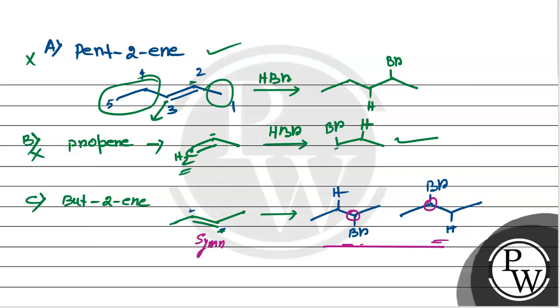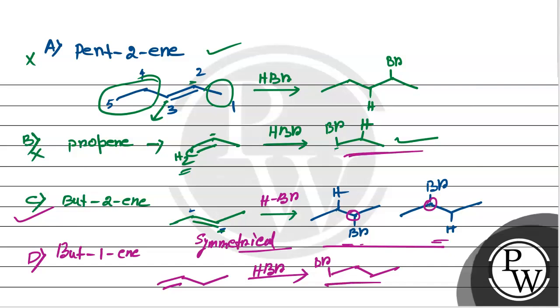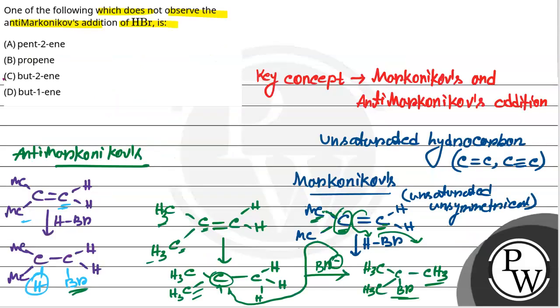In symmetrical systems, we can't distinguish Anti-Markovnikov and Markovnikov products. But-2-ene is symmetrical, so Anti-Markovnikov addition cannot be observed. I hope you understand the solution very well.